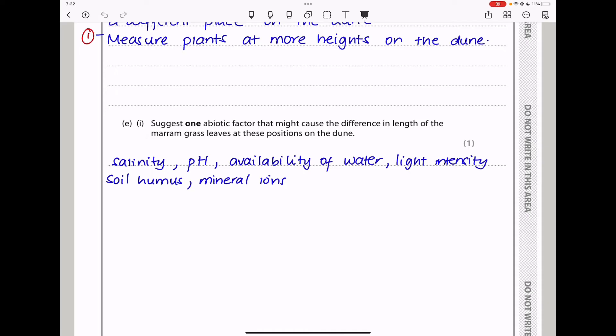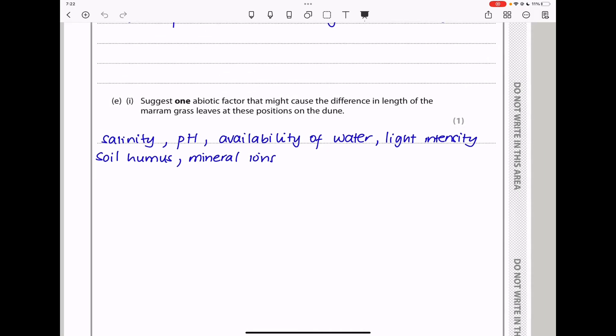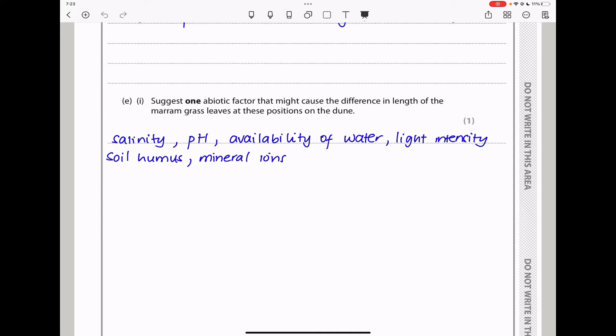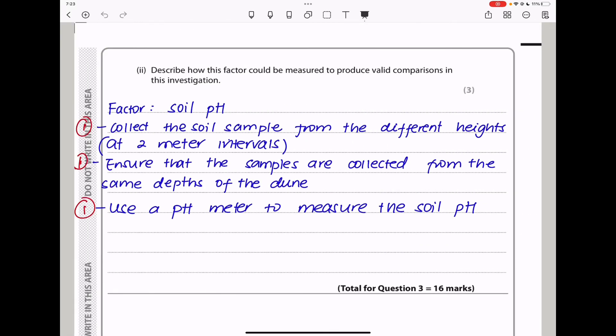Here they say, suggest one abiotic factor that may cause the difference in length of the Marram grass leaves at these positions on the dune. Of course, salinity, pH, availability of water, light intensity, mineral ions, as well as fertility of the soil, or soil humus. Any of these could affect the length of the Marram grass leaves that were sampled. Finally, they say, describe how this factor could be measured to produce valid comparisons in this investigation. I chose soil pH. How can we measure soil pH? We have to sample the soil appropriately or correctly. So I said, collect the soil sample from different heights at two meter intervals along the dune and ensure that the samples are collected from the same depth of the dune. Then use a pH meter to measure the pH of the soil. So this brings us to the end of question three.